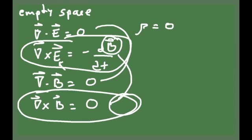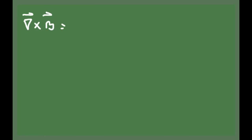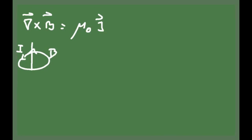The term that he ended up adding was added to Ampere's equation. The curl of B, in general, is equal to mu sub zero times the current density. The term that Maxwell added was associated with the contribution to the magnetic field due to a changing electric field. This term is called the displacement current. This is the term that restores the symmetry between the electric and the magnetic field in the equations for electromagnetism.